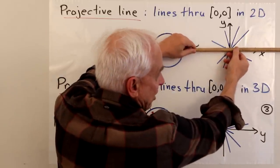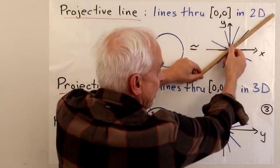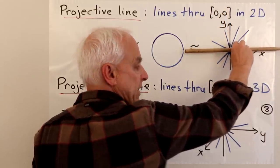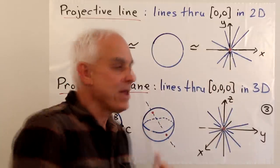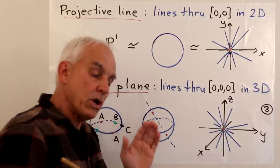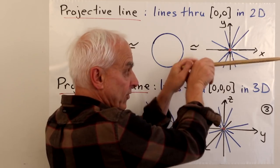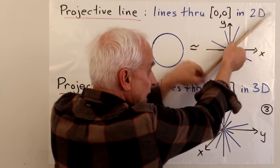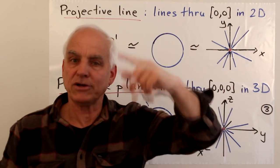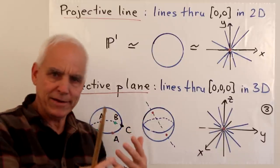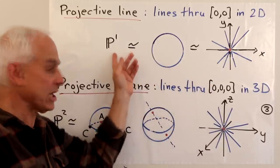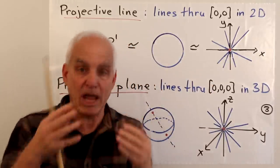If we think about moving through that space — starting with the X axis and rotating the line — once we get to a half turn, we see that we're back where we started, in the sense that the line is the same line. Because we're talking about lines and not rays, a half turn returns us to the same position. So as we go from start to a half turn, we're actually completing a full cycle. Topologically, in terms of the overall shape of this space of lines, we're getting a circle — the projective line is, topologically, a circle.